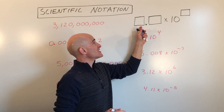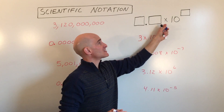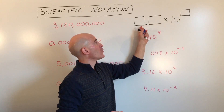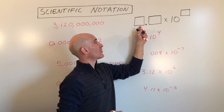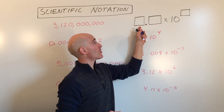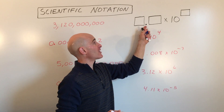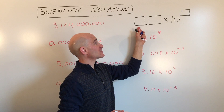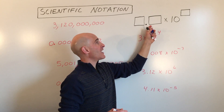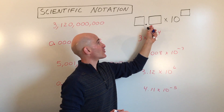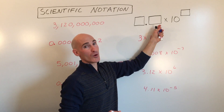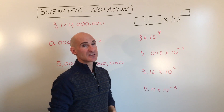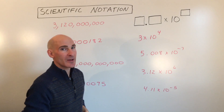When we write a number in scientific notation, you want a single digit besides zero in front of the decimal point — to the left of the decimal point — and the other significant digits to the right of the decimal point. Let's take a look at some examples and I'll show you what I mean.